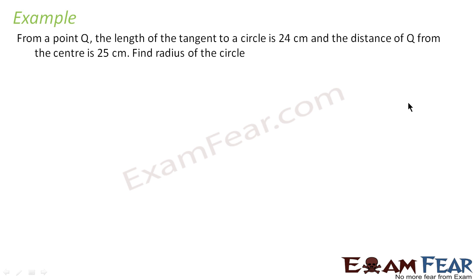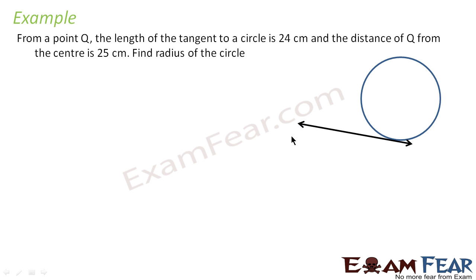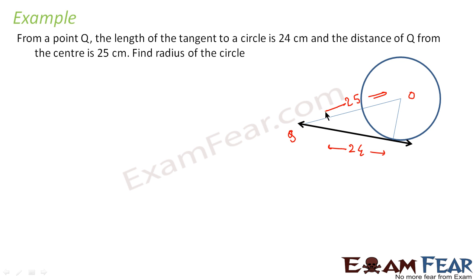Let us take an example. From a point Q, the length of the tangent to a circle is 24 and the distance of Q from the circle center is 25. We have to find the radius of the circle. Let us draw it first — this is a circle, this is the tangent, and this is point Q. The tangent length is 24 and the distance from Q to center is 25. We have to find the radius.